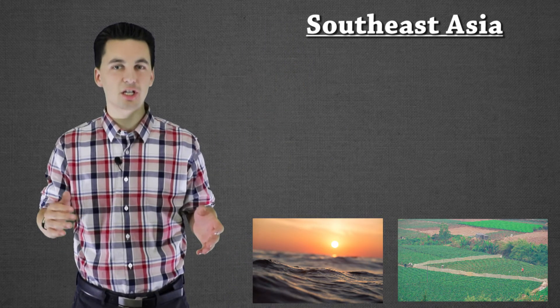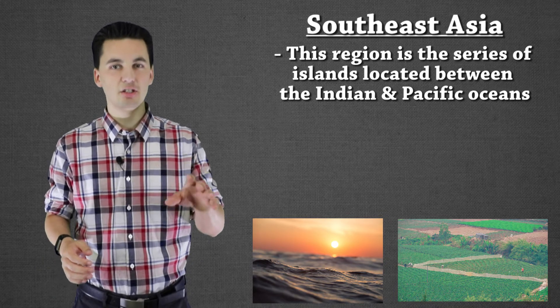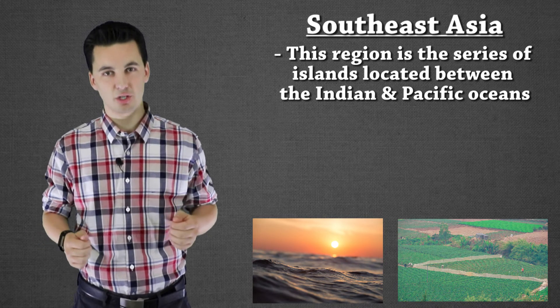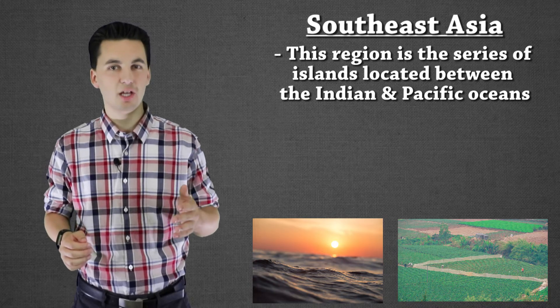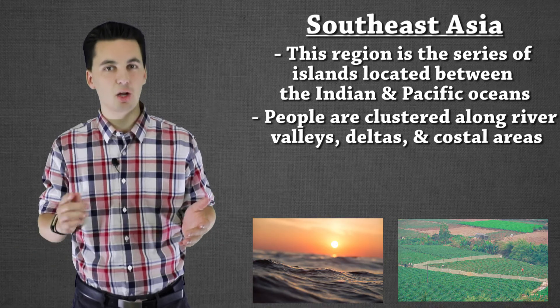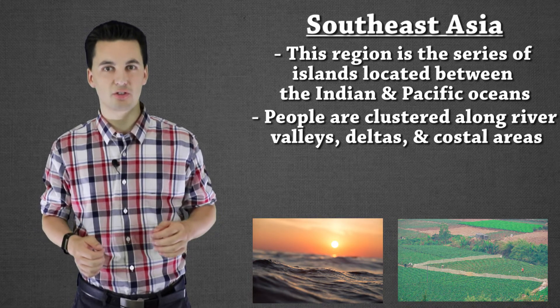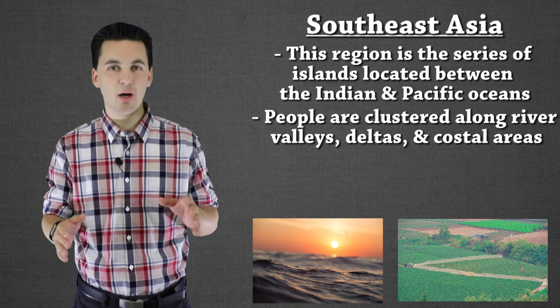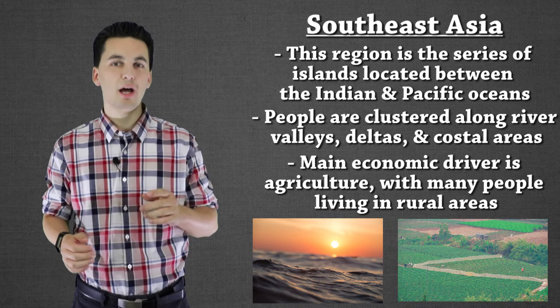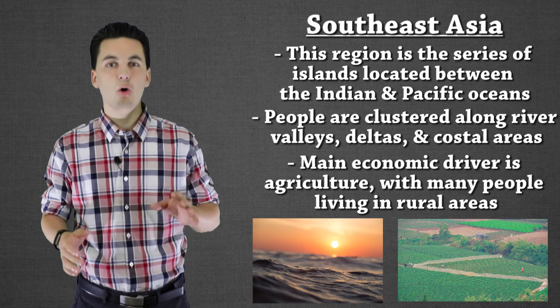Our last main population cluster is Southeast Asia — from the Indian Ocean kind of to the Pacific. Malaysia and Indonesia would be examples of countries that fall under this region. The majority of people here are living on a coastline, on a river, or on a delta — so again, focusing on water, not necessarily around resources like in Europe. We also have a high amount of agricultural work, a lot of people living in rural communities, not a lot of urbanization, and a lot of population growth. Hopefully you can start to see some trends across our four main clusters, and what's going on for the future of these regions economically and locationally.